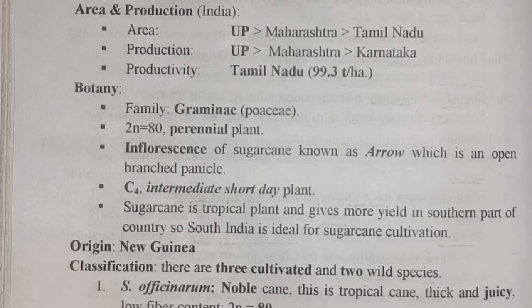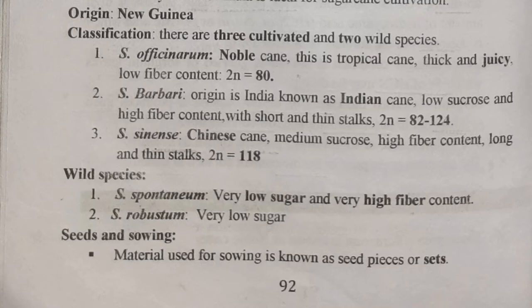Classification: there are three cultivated and two wild species. Cultivated species are officinarum, barberi, and sinensis. Saccharum officinarum, also known as noble cane or tropical cane, is thick and juicy, with low fiber content, and 2n is equal to 80. Saccharum barberi originates in India, so it is also called Indian cane, with low sucrose and high fiber content, short and thin stalks, and chromosome number 2n equal to 82 to 124.